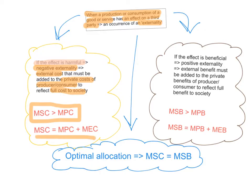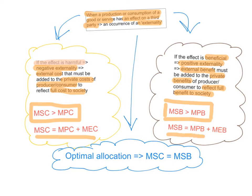Now what if the effect is beneficial? We say that there's a positive externality. This is an external benefit that must be added to the private benefits of the producer or the consumer to reflect the full benefit to society. In this case the marginal social benefit is higher than the marginal private benefit, because marginal social benefit equals marginal private benefit plus marginal external benefit.